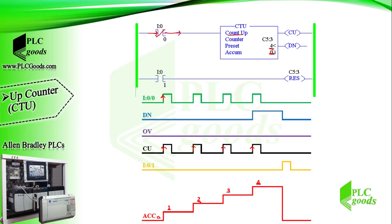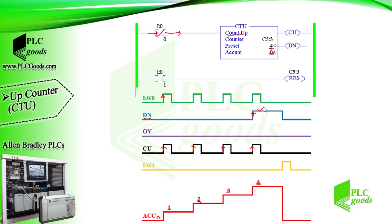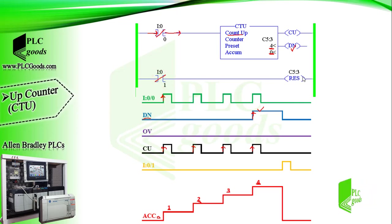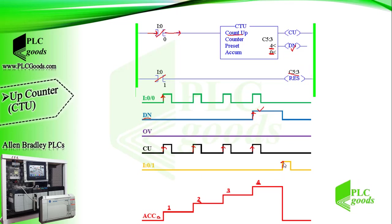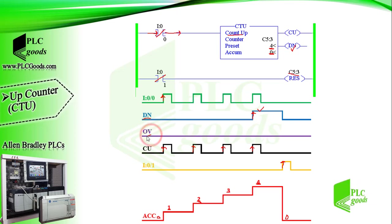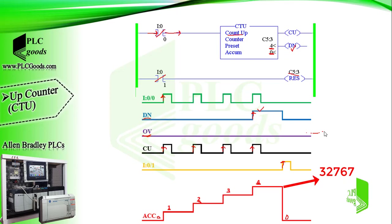At this time, when the accumulated value is equal or greater than the preset value, the done bit will be on. According to the second line, by activating this input, the counter will be reset and the accumulated value will be 0 again. Note that the overflow bit will be on if the accumulated value exceeds 32767.